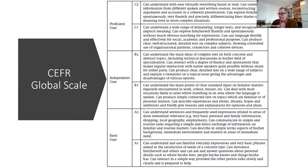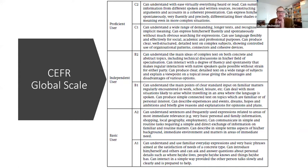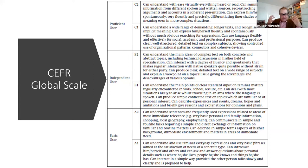At B2, we don't expect native fluency, but we do expect a degree of fluency and spontaneity that makes regular interaction with a native speaker very possible and unproblematic. At level B2, we're looking at a wide range of subjects. Compared to basic users focused on very personal, immediate things — like ordering a bus ticket — at B2 you can discuss a variety of subjects, go into detailed information, and talk about abstract things.